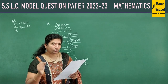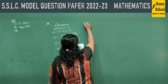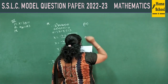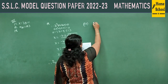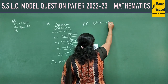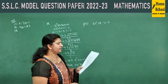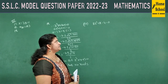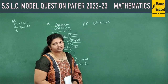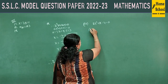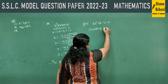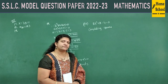There is one more OR question — in the annual exam you select only one. Find the roots of the quadratic equation 2x² + x − 4 = 0 by the method of completing the square. Observe the equation. What are the rules for this method?